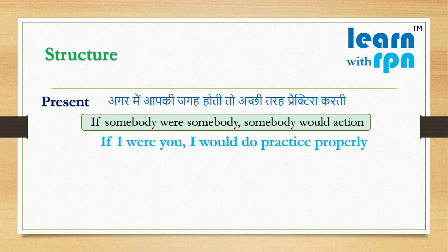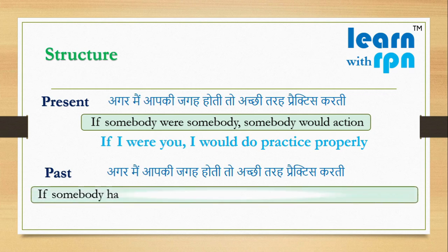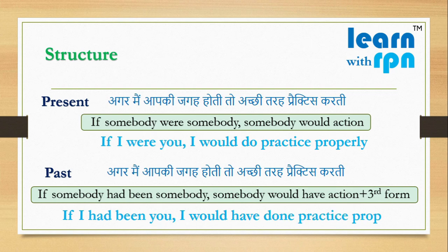Once my teacher also said the same to me: अगर मैं आपकी जगह होती, तो अच्छी तरह practice करती. This time, the situation is related to past. Structure for such past conditional sentences: If somebody had been somebody, somebody would have action (third form). So here is the English as per the structure: If I had been you, I would have done practice properly.